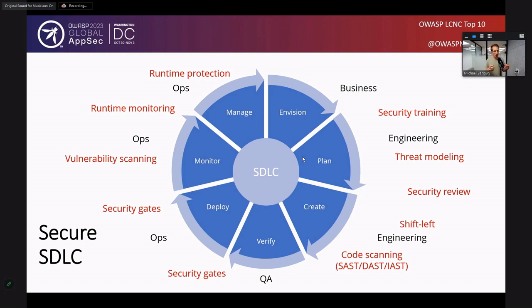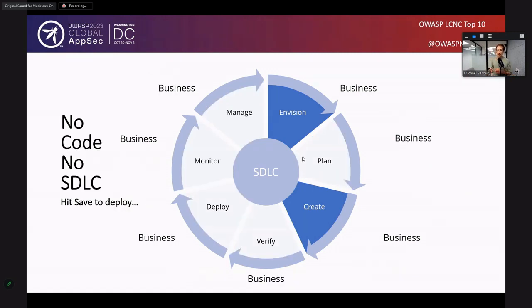Now let's think about how this translates to the world of Low-Code, No-Code. If we're thinking about No-Code and how the SDLC works there, essentially there's nothing really forcing you to have any sort of SDLC. The business user is the only person who goes through the entire cycle. There's no exchange of hands. No product manager, security, or engineering team involved. There's just a business user. They see a problem, think about a solution, and just do it — they drag and drop boxes, talk to a chat, and the application gets deployed to production with no review and no monitoring.